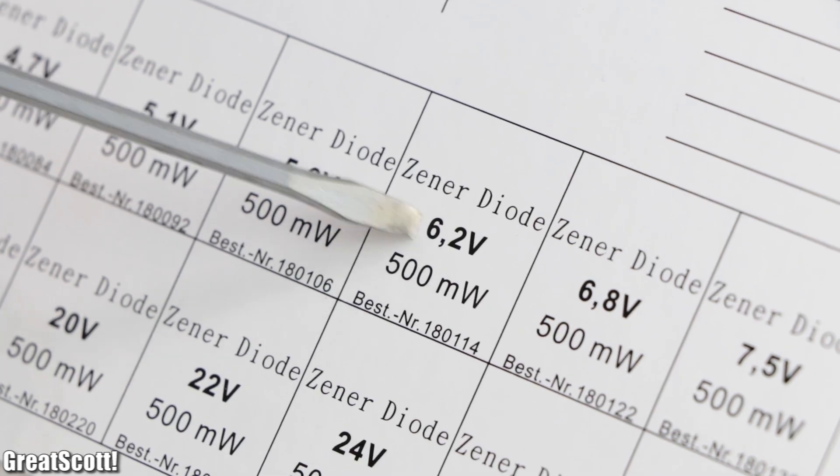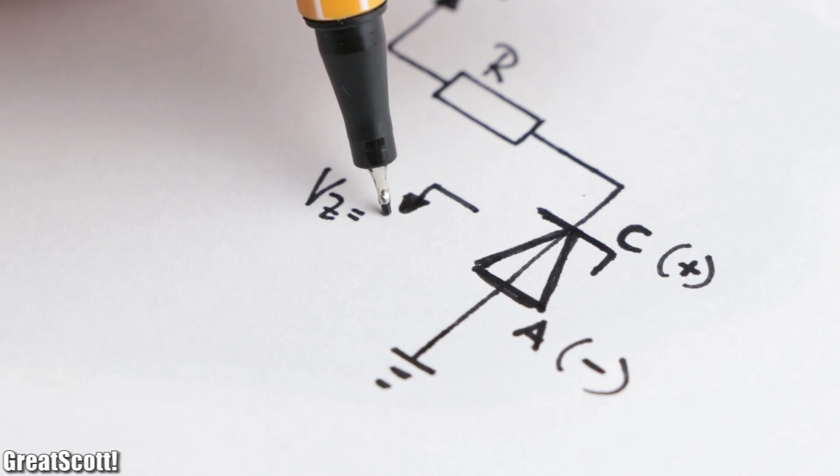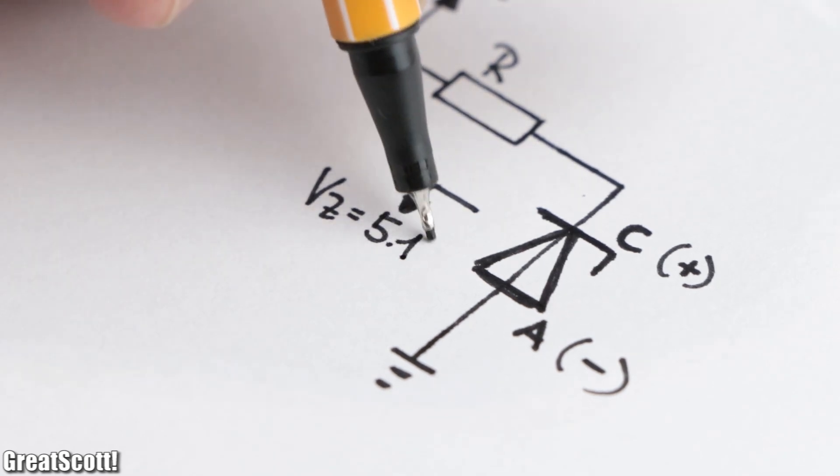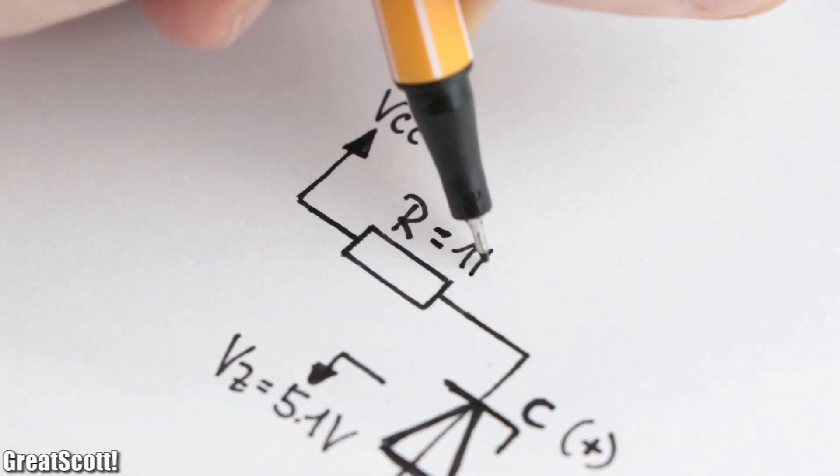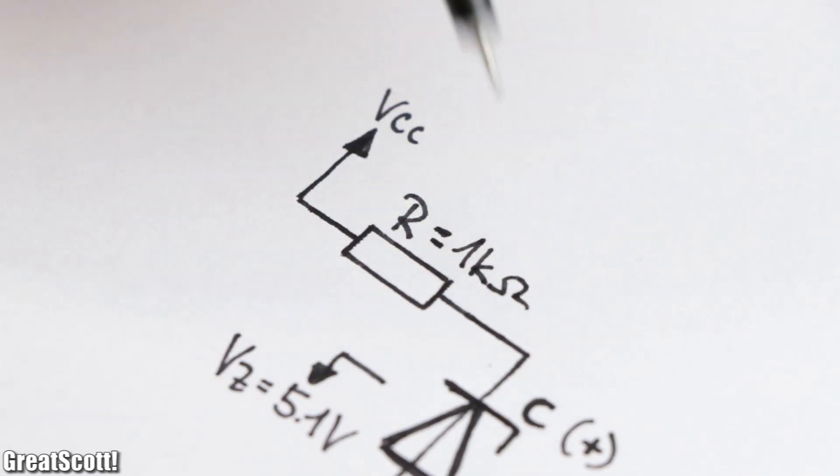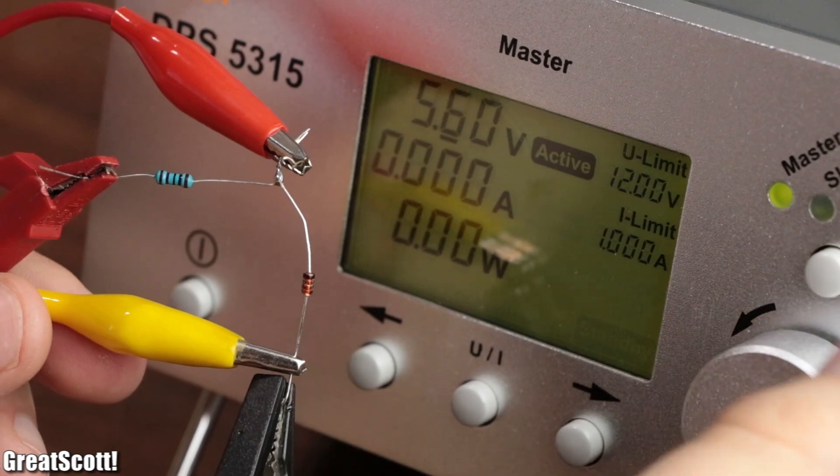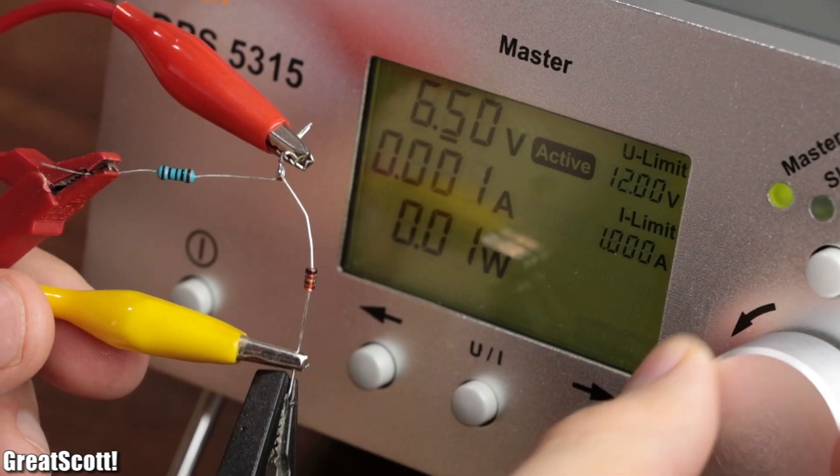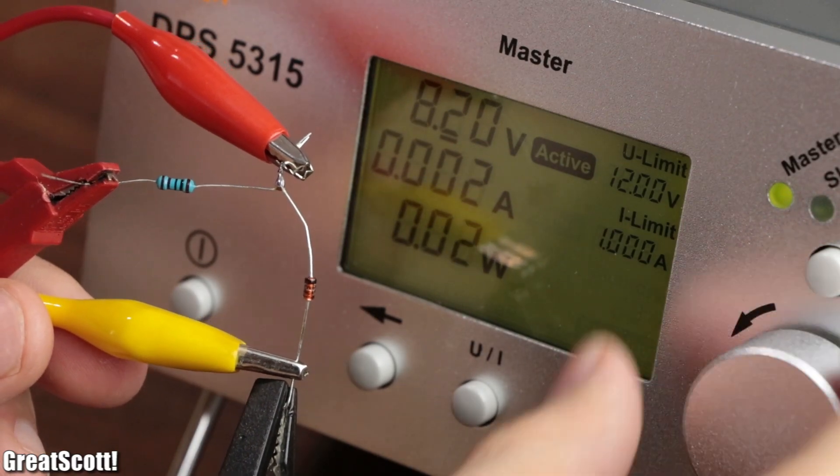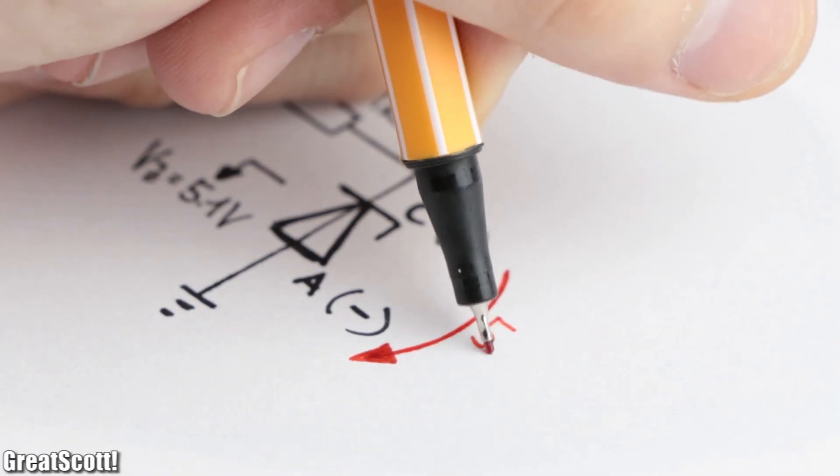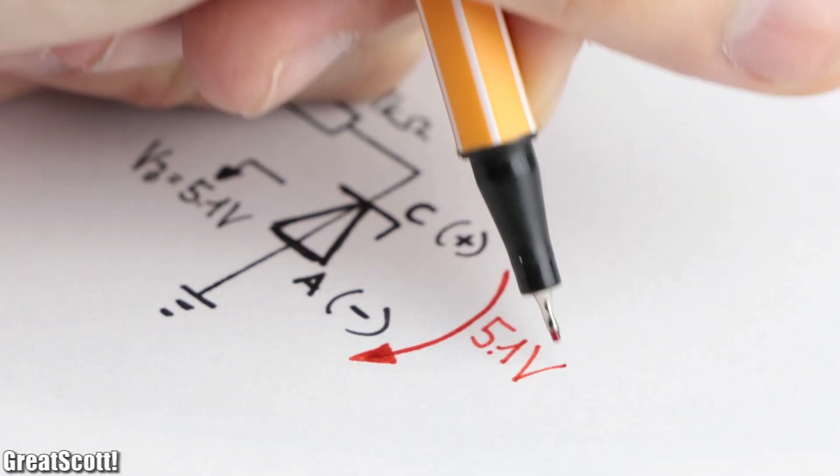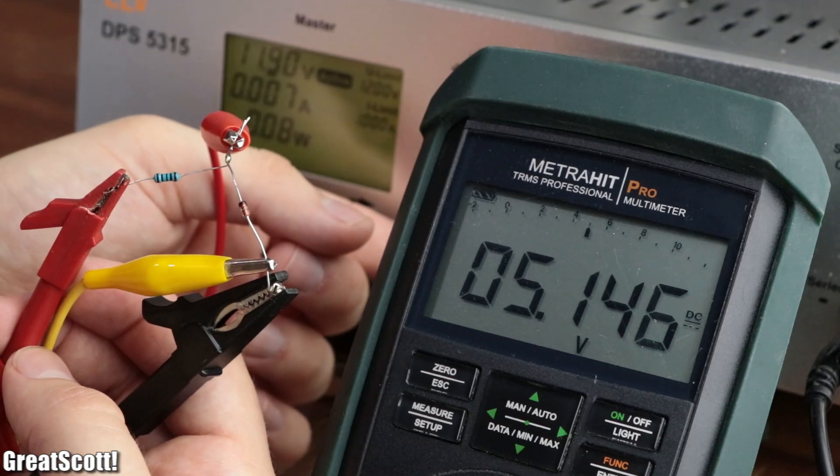If we, for example, use a 5.1V Zener diode in combination with a 1kΩ resistor, we can see that by applying a voltage above the Zener voltage, the Zener diode becomes conductive and creates a 4V voltage drop equivalent to its Zener voltage. Well, at least close to it.